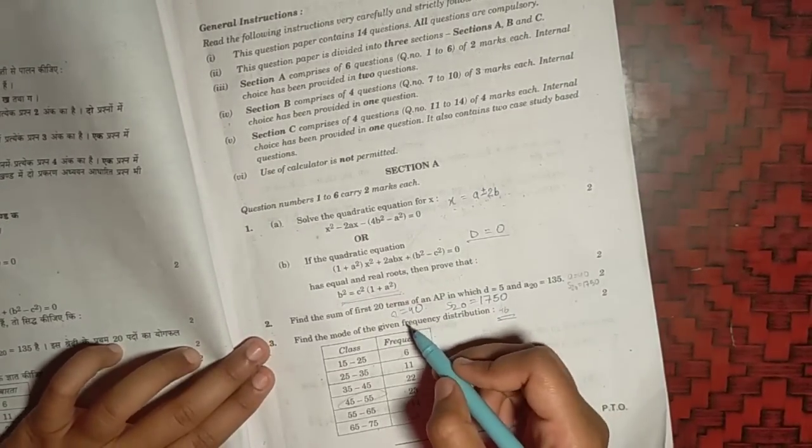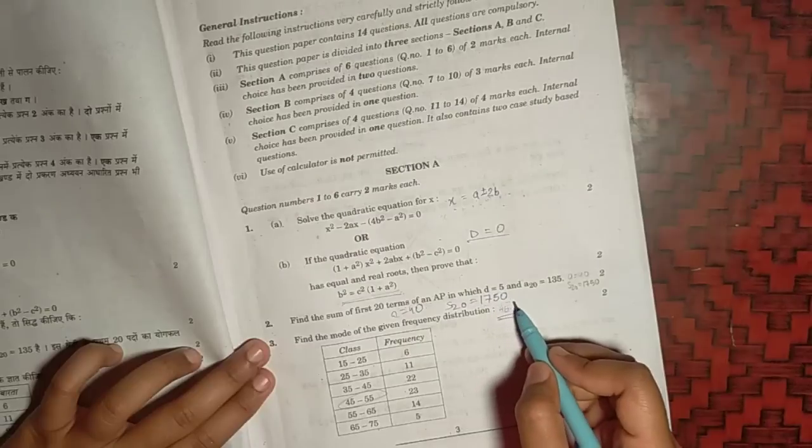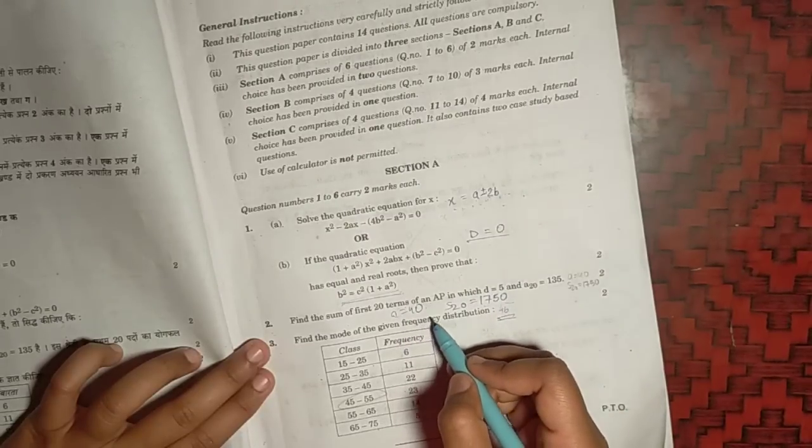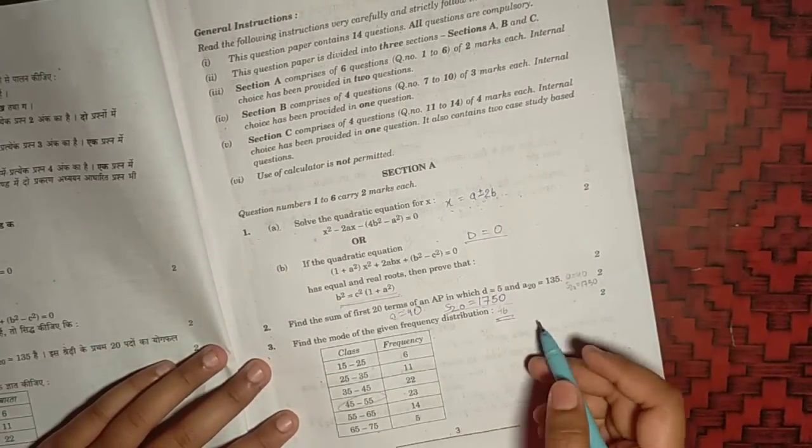Second question, we have to find the sum of the first 20 terms, which will be 1750. A will come out 40 in this case, but we just have to give this one. Third question, we have to find the mode, which will be 46.